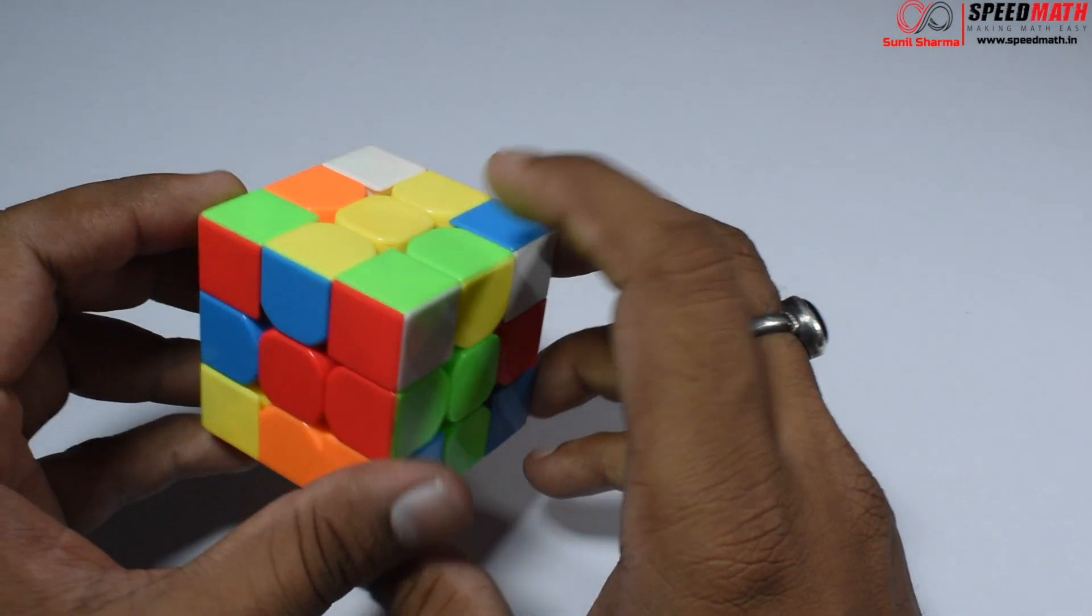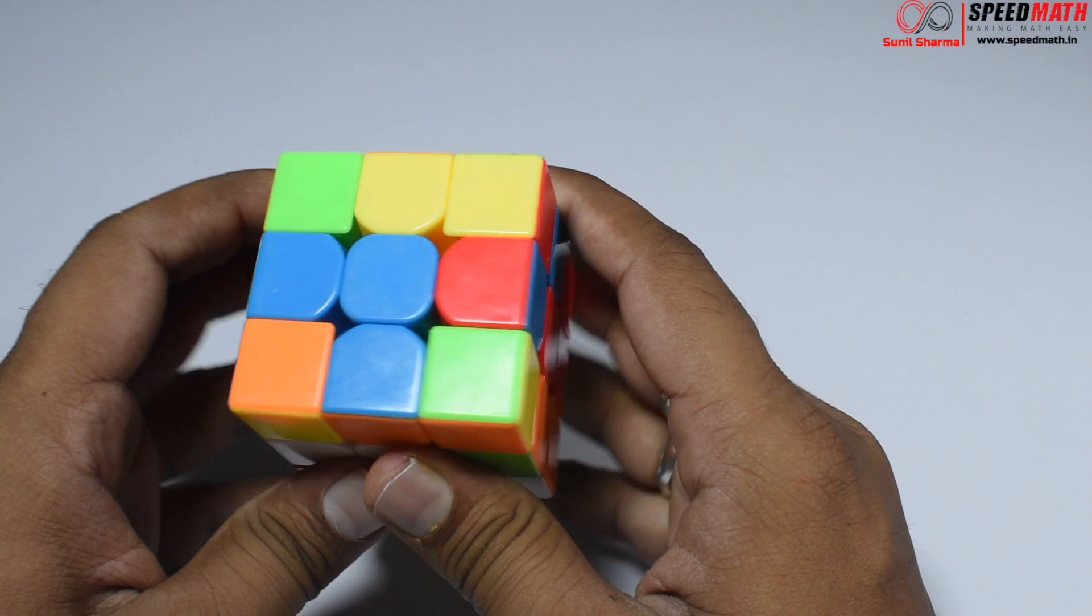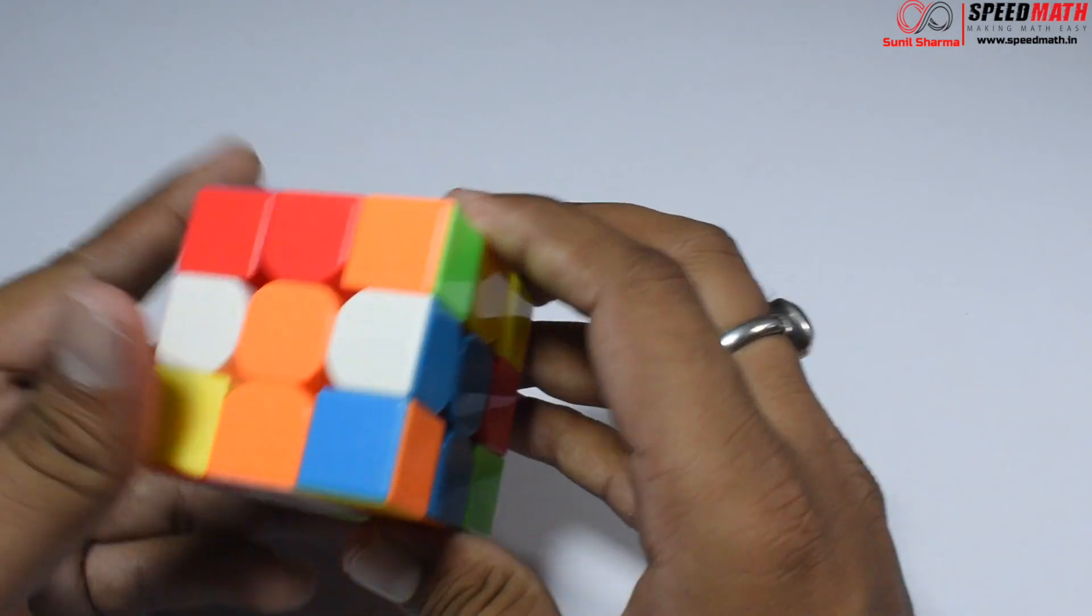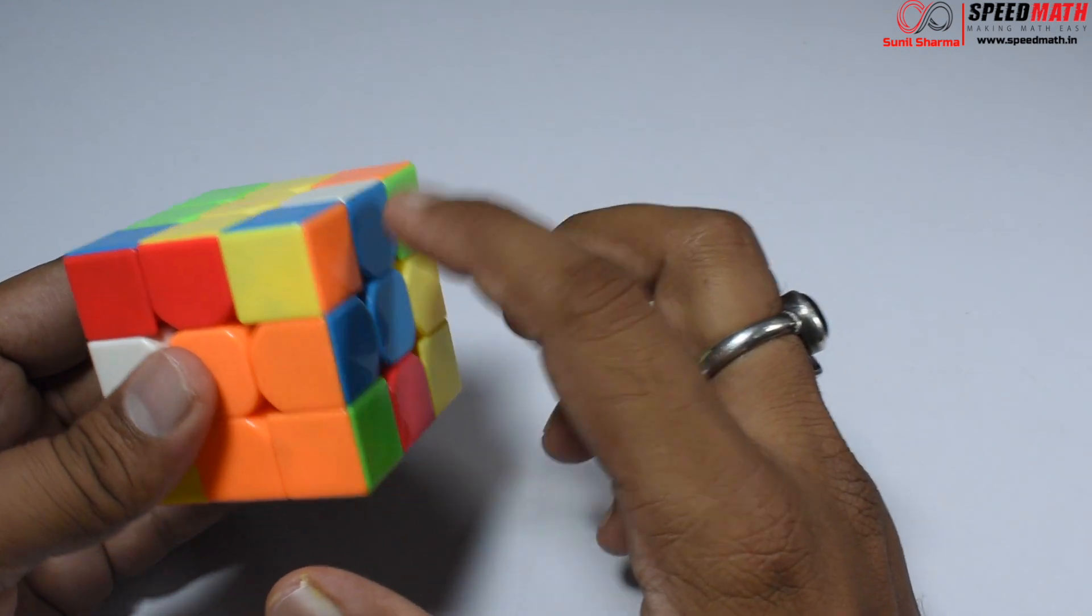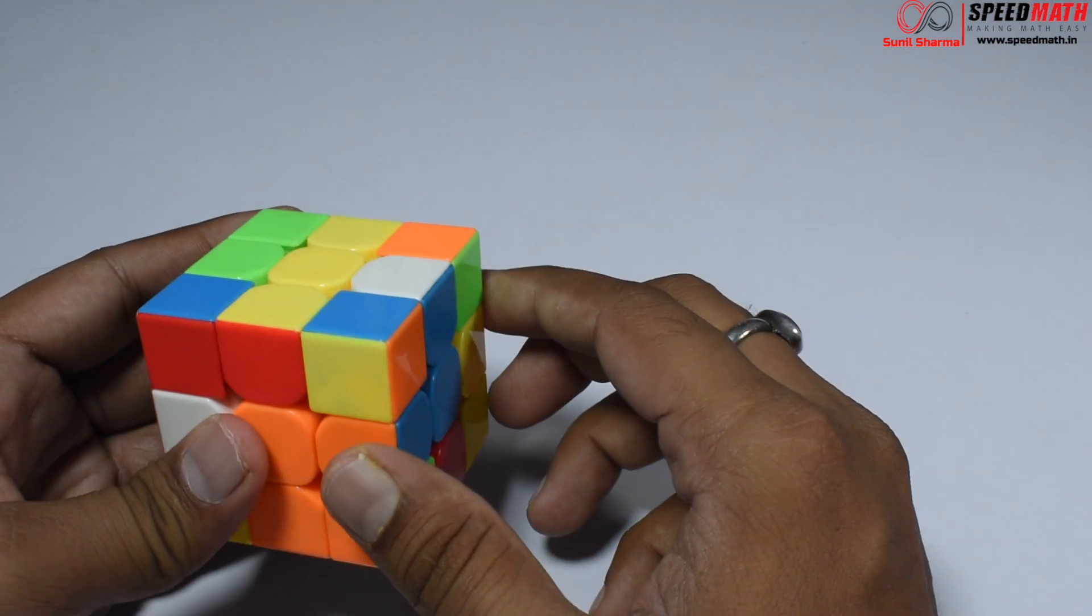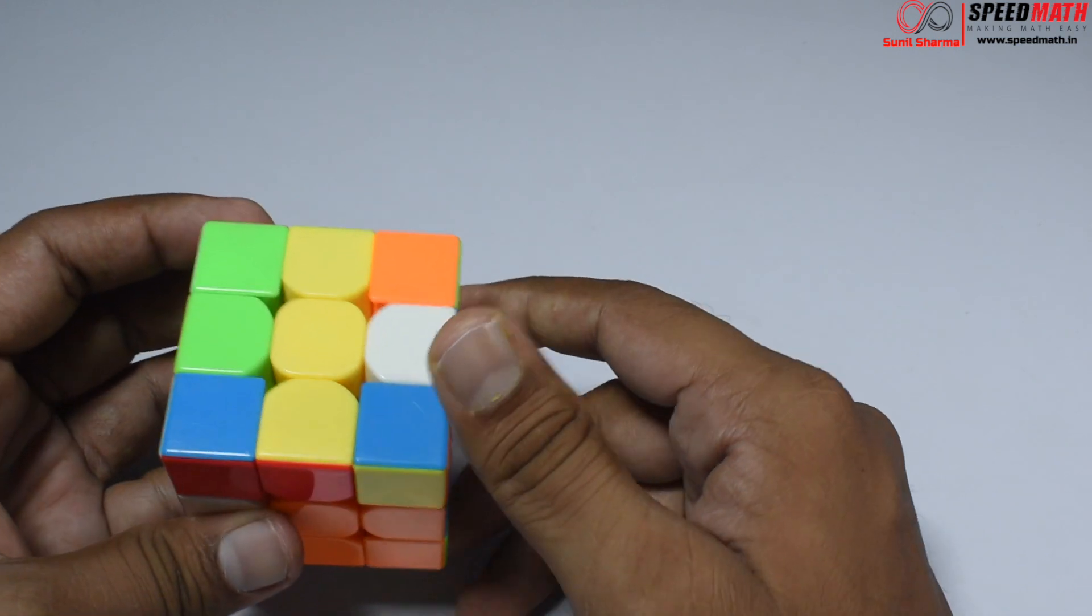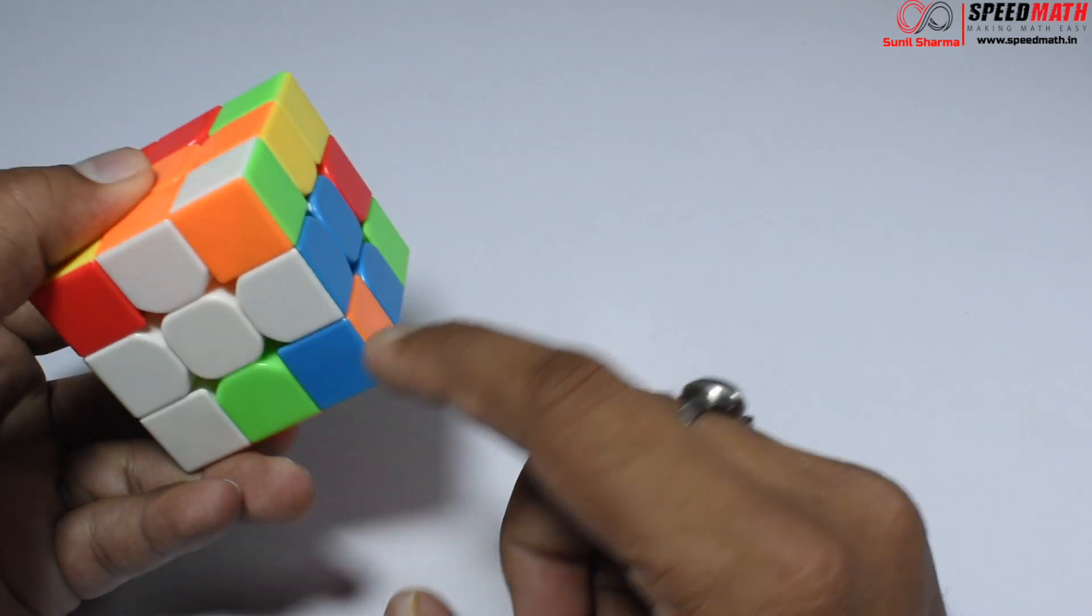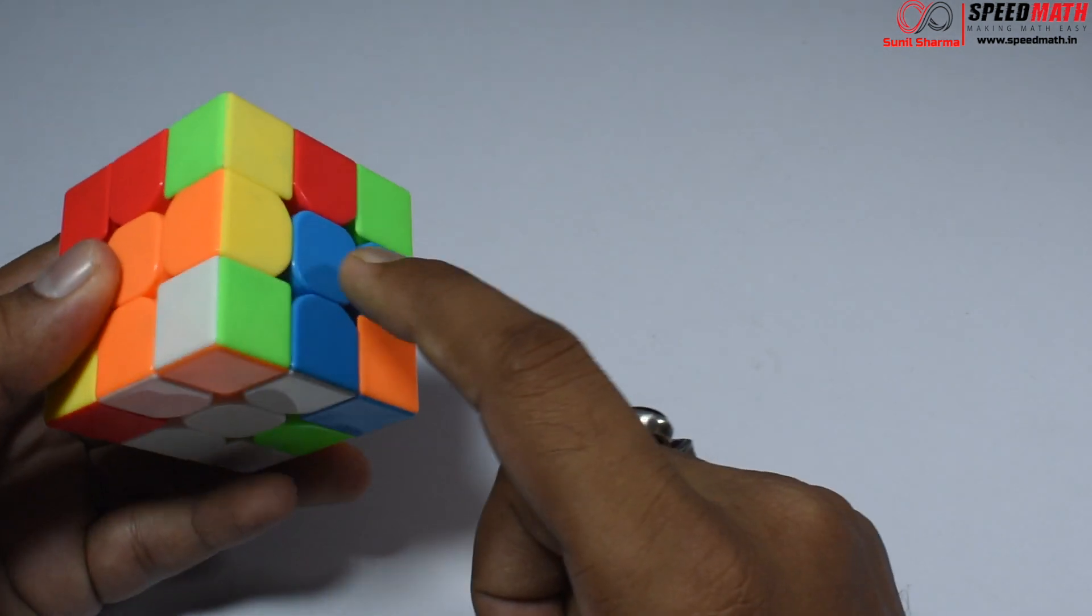Let us locate the other one. Here it is - blue. I need to bring it here exactly opposite. The white is already on the top, just a rotation in the anti-clockwise direction will bring it here and it's properly aligned.